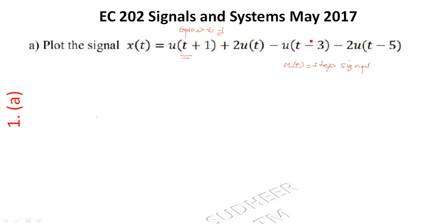When t-3 = 0, that means t = +3, so u(t-3) starts at t = +3. When t = +5, u(t-5) starts. These are the four signals we have to plot.